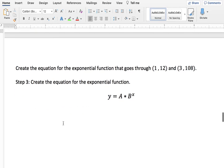Finally, now that we know our A value, we know our B value, we can create an equation for the exponential function that goes through these two points. So we just determined that our A was equal to 4 and our B was equal to 3. So there you go. This is the exponential function that goes through (1, 12) and (3, 108).